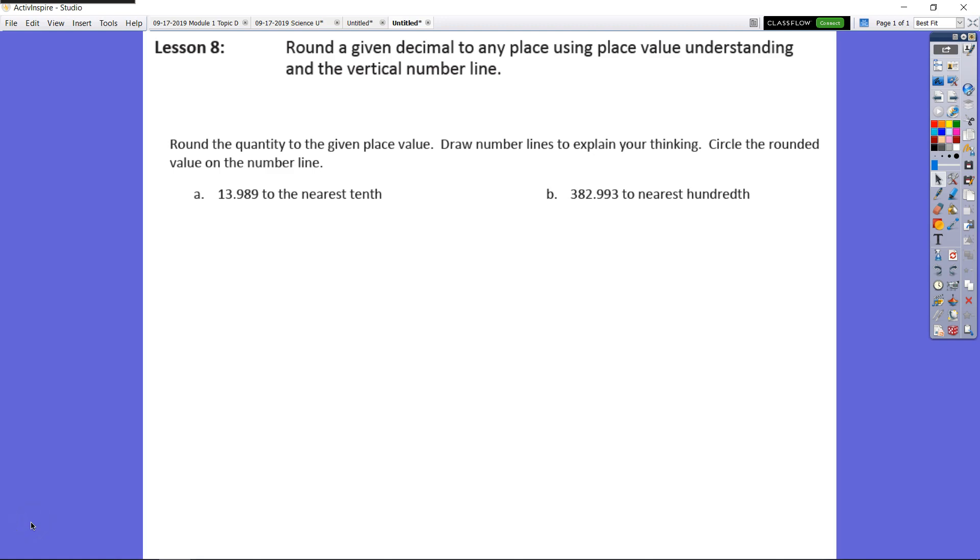So here in lesson 8 we are rounding a given decimal to any place using place value understanding and also using a vertical number line. Let's take a look here.